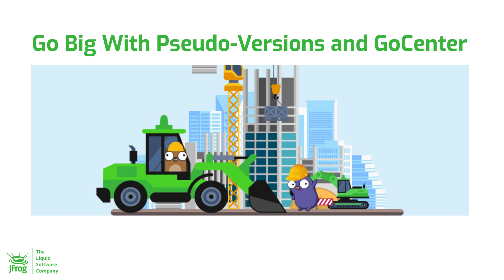Go modules have helped bring order to Go development, but there's been some disorder lurking. Managing module pseudo versions can be difficult, especially with some of the latest changes to Go. JFrog Go Center, the free repository of versioned Go modules, now includes some important updates that can help you stay on course. Let's take a look at how pseudo versions work and what you can expect from those changes. We also offer some guidance on keeping your Go builds working as you upgrade to Go 1.13 and later.